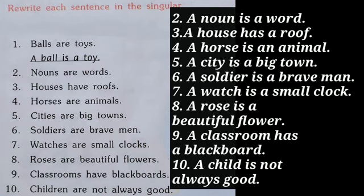For the remaining examples: 'Watches are small clocks' becomes 'A watch is a small clock'; 'Roses are beautiful flowers' becomes 'A rose is a beautiful flower'; and 'Classrooms have blackboards' becomes 'A classroom has a blackboard'. In the tenth one, we have the plural of child, which is children. The singular form gives us: 'A child is not always good'.